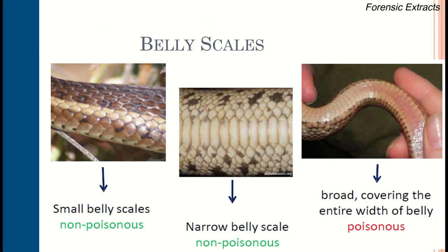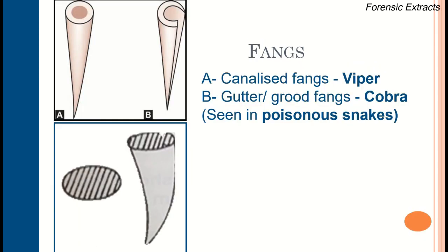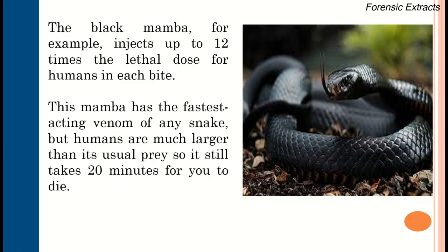Belly scales are small in non-venomous snakes, and narrow belly scales not involving the complete width of the belly are also seen. In venomous snakes, the belly scales are broad and cover the entire width of the belly. Regarding fangs, vipers have canalized fangs with a canal inside, cobras have grooved or broad fangs, and non-venomous snakes have solid fangs.